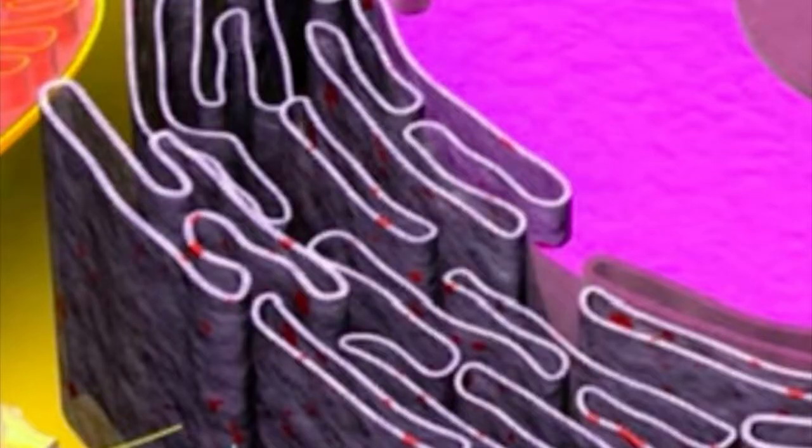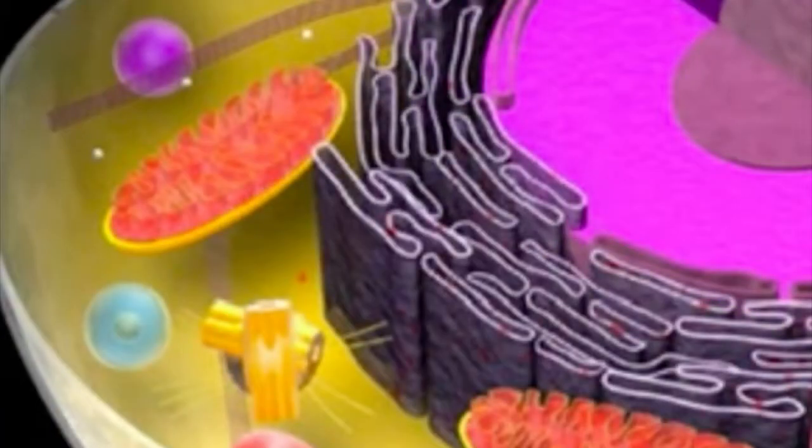The job of the Golgi apparatus is to process and bundle macromolecules like proteins and lipids as they were synthesized within the cell. Ribosomes are a cell structure that makes protein. Protein is needed for many cell functions such as repairing damage or directing chemical processes.